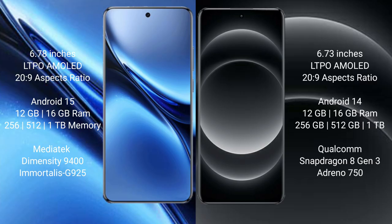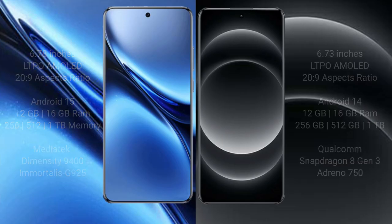Vivo X200 Pro comes with 12GB or 16GB RAM and 256GB, 512GB, or 1TB internal storage, powered by the Qualcomm Snapdragon 8 Gen 3 processor. Xiaomi 14 Ultra also comes with 12GB or 16GB RAM and 256GB, 512GB, or 1TB internal storage, with a Qualcomm Snapdragon 8 Gen 3 processor.